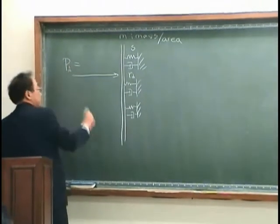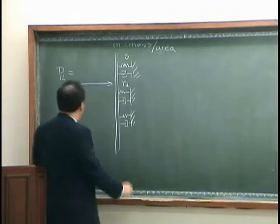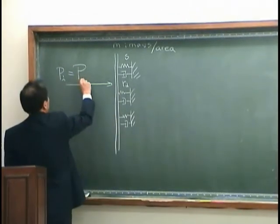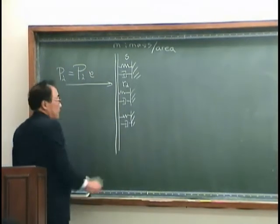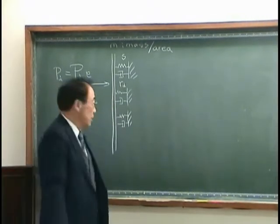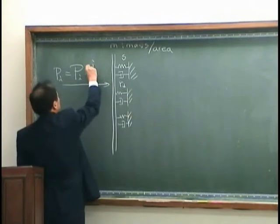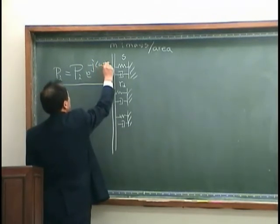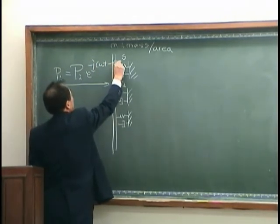I stands for incident wave that has complex magnitude Pi, and we assume that the wave is harmonic, therefore I write exponential j minus omega t minus kx.